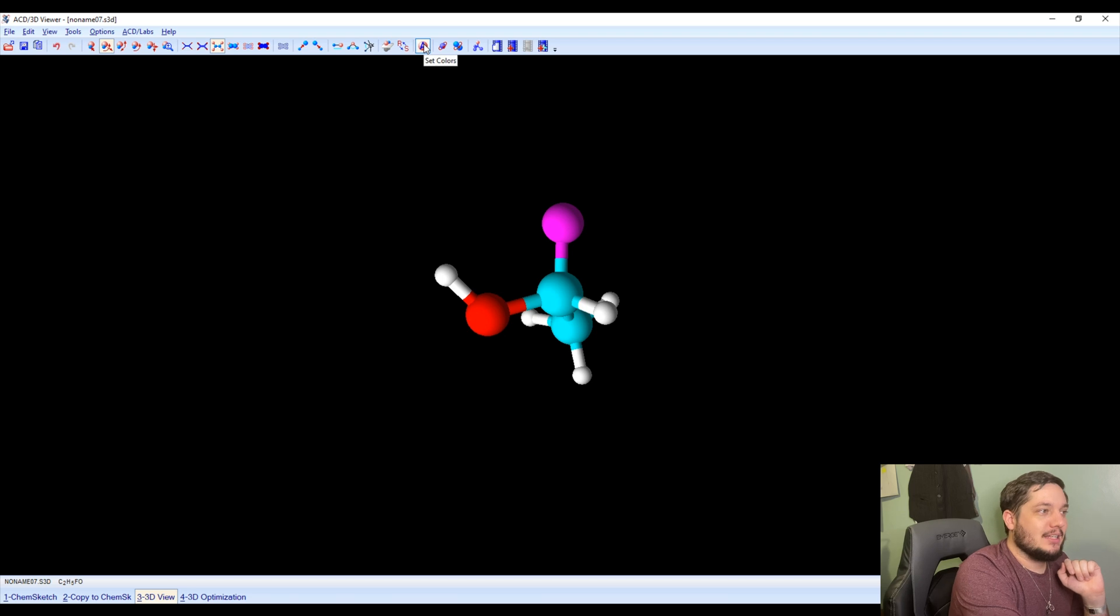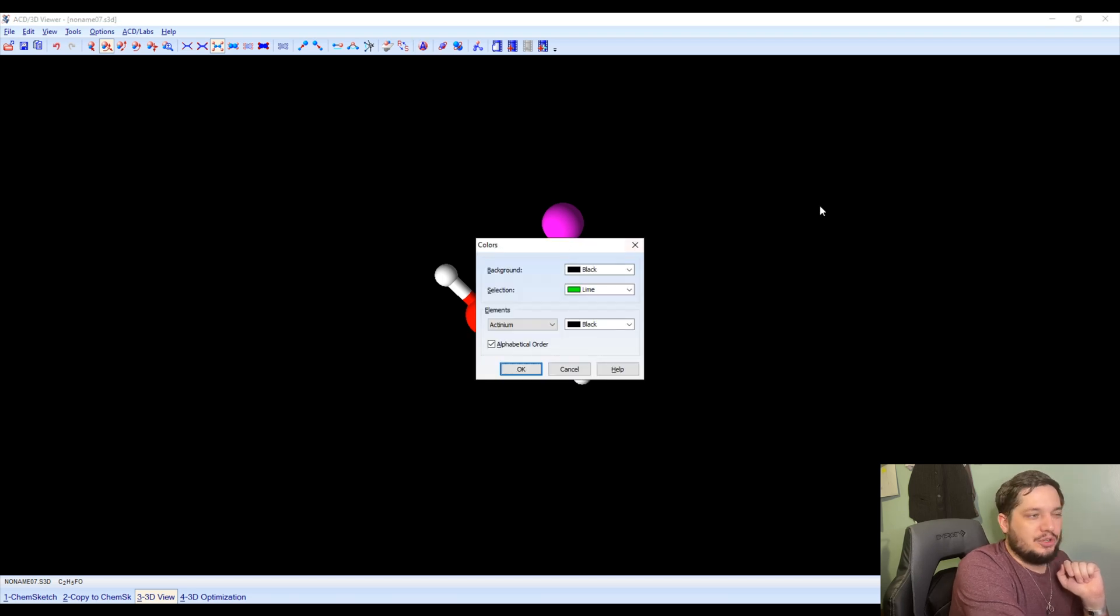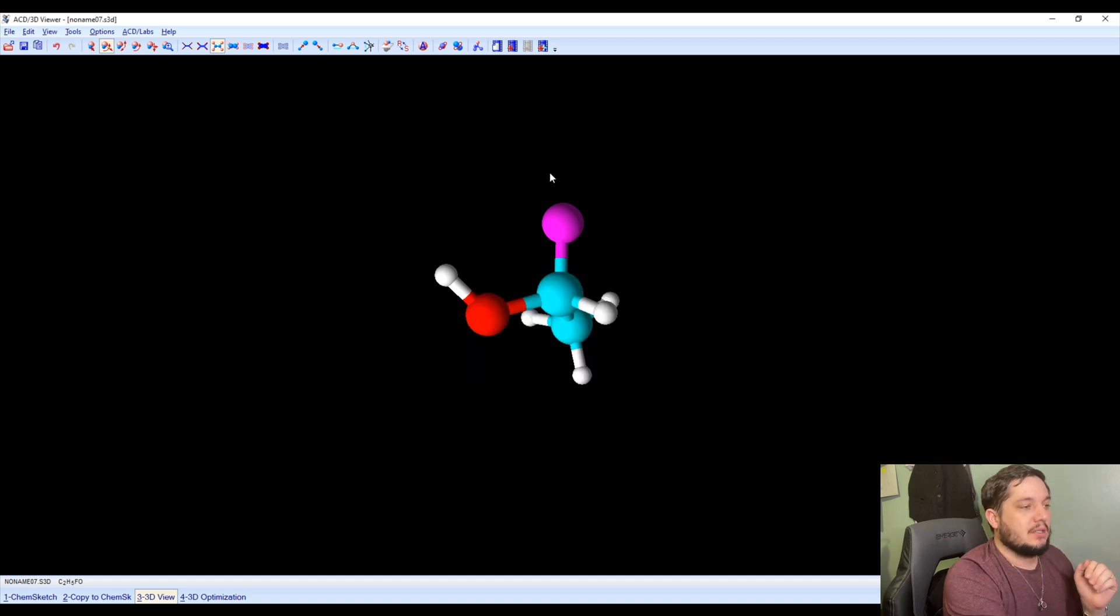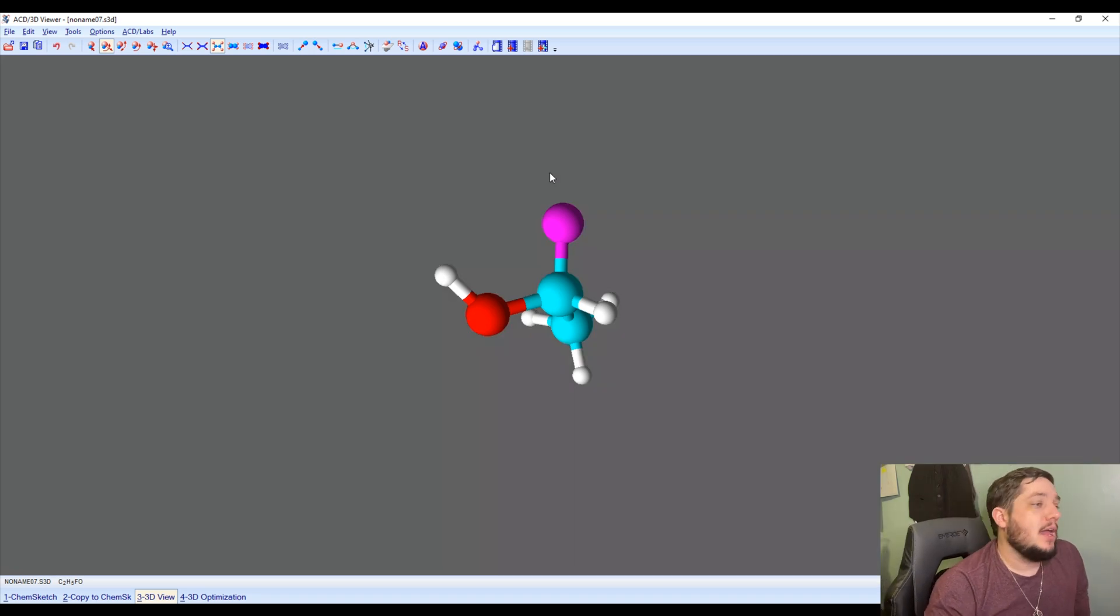But then you also have access to setting colors too. So there's lots of things that you can do in terms of changing the way in which everything looks, I actually prefer the grayish background, not quite as heavy as the black. So that's something that you can do as well. And if you want to do a lot in terms of looking at molecules, there are lots of options here that you have access to in order to kind of get everything that you want in terms of having your molecule looking great.